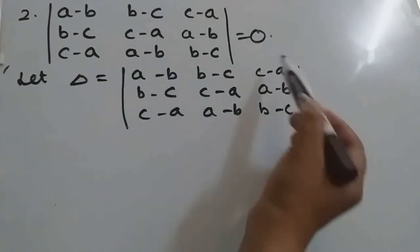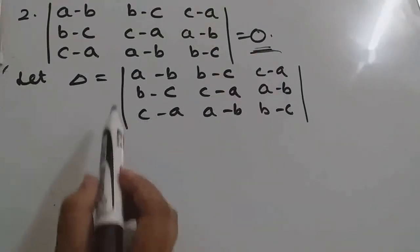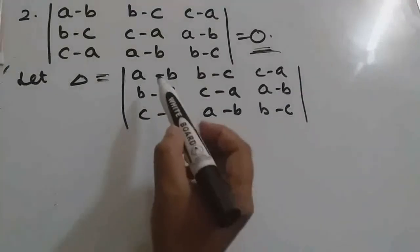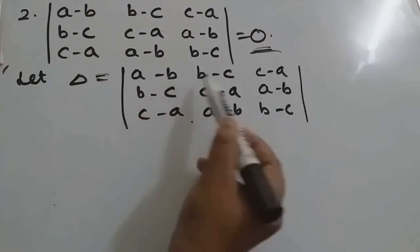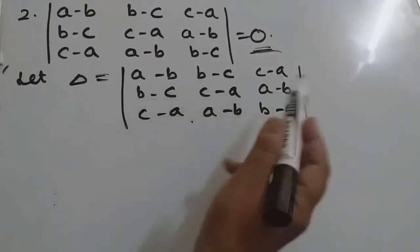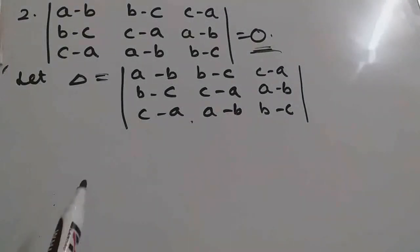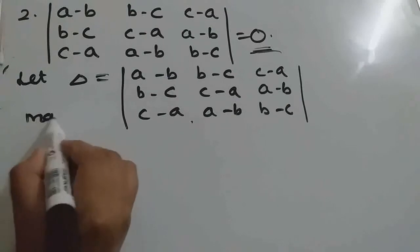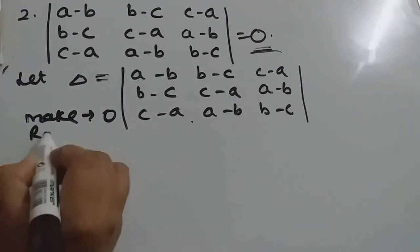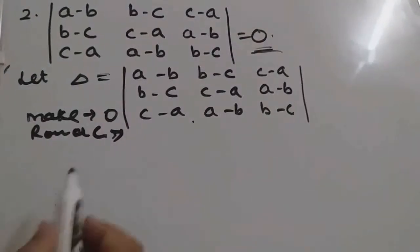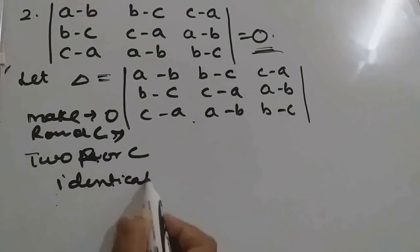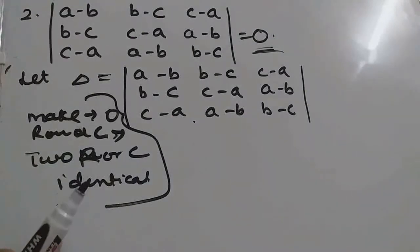See, we want to get 0. So what we can have in this determinant. Either we can make two rows or two columns identical, or if by making, by doing any operation if we will make any row or column, all element of any row or column will be 0, then this determinant directly will be 0. So what two things we can do here? We can make element 0, row element or column element 0, or two row or column identical we can make. By doing some operations.